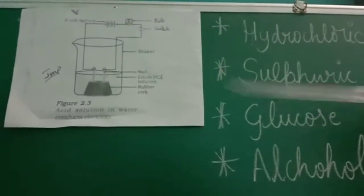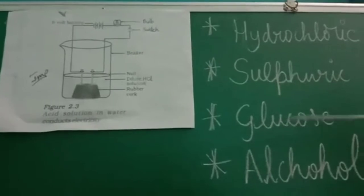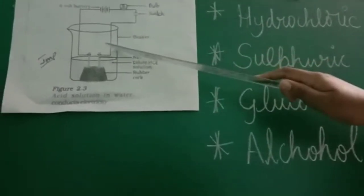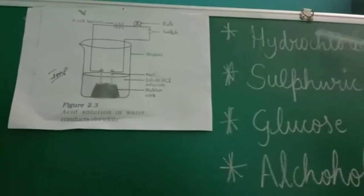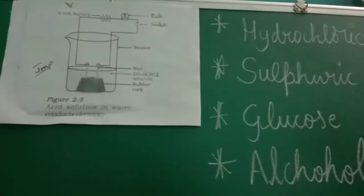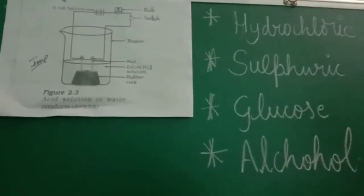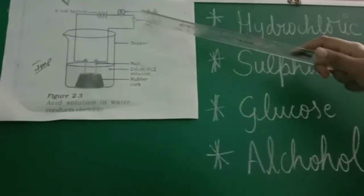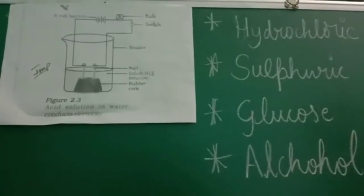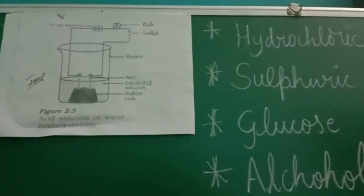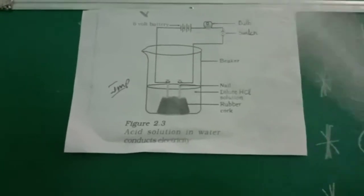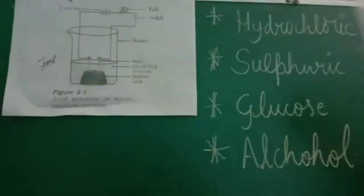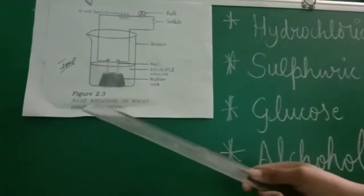So why, when you add a non-acidic solution, is current not generating? Because in those solutions, H⁺ ions are not there. Only in acid there will be H⁺ ions, and this H⁺ ion helps the current to generate and also helps the bulb to glow. So always remember: to conduct electricity, we always require acidic solution, because acidic solution only has H⁺ ions in it, whereas basic solution does not have H⁺ ions. This is the complete activity of acid solution in water conducting electricity.